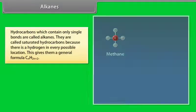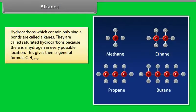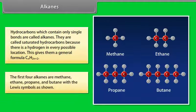Alkanes: Hydrocarbons which contain only single bonds are called alkanes. They are called saturated hydrocarbons because there is a hydrogen in every possible location. This gives them a general formula CnH2n+2. The first four alkanes are methane, ethane, propane and butane with the Lewis symbol as shown.